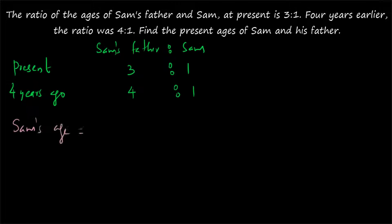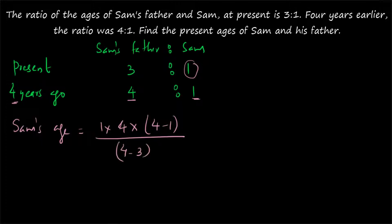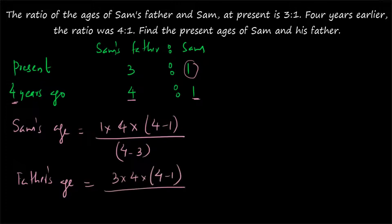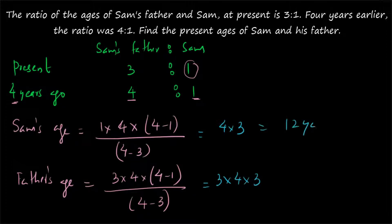Sam's age = y into T into (a minus b), divided by difference of cross product = 1 into 4 into (4 minus 1), divided by (4 into 1 minus 3 into 1) = 1 into 4 into 3, divided by (4 minus 3) = 12 divided by 1 = 12. Father's age: replace the 1 with 3, so 3 into 4 into 3, divided by 1 = 36. Sam's present age is 12 years and father's present age is 36 years.